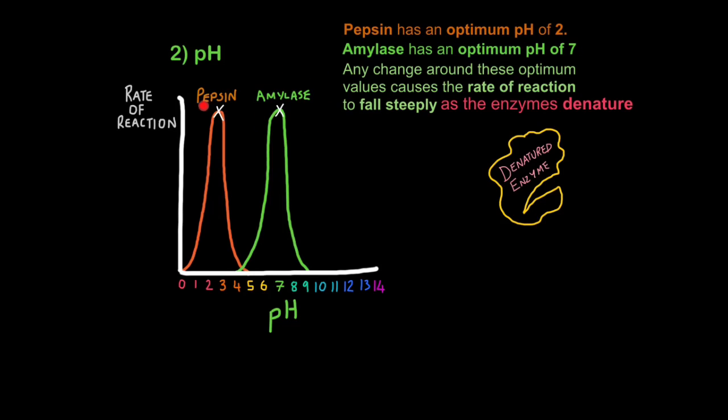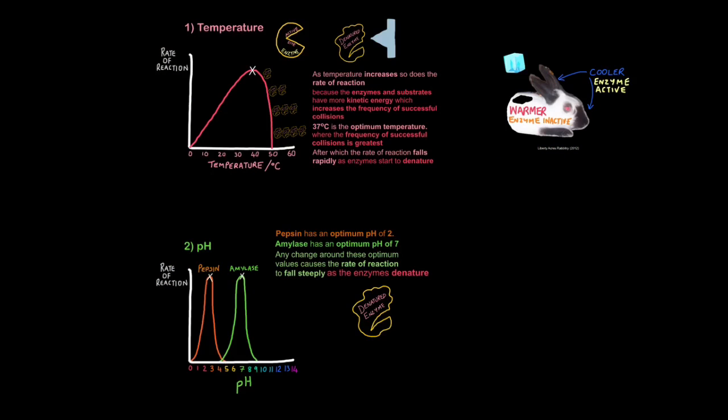If you deviate away from optimum conditions, then once again the enzyme can no longer bond with the substrate because it starts to denature. So to explain this graph you'd say pepsin has an optimum pH of 2, amylase has an optimum pH of 7. Any change around these optimum values causes the rate of reaction to fall steeply as the enzyme denatures. Notice how the pH curves have a steeper fall and rise than the temperature curve. This tells us that enzymes are a little bit more fussy about pH levels than they are about temperature.